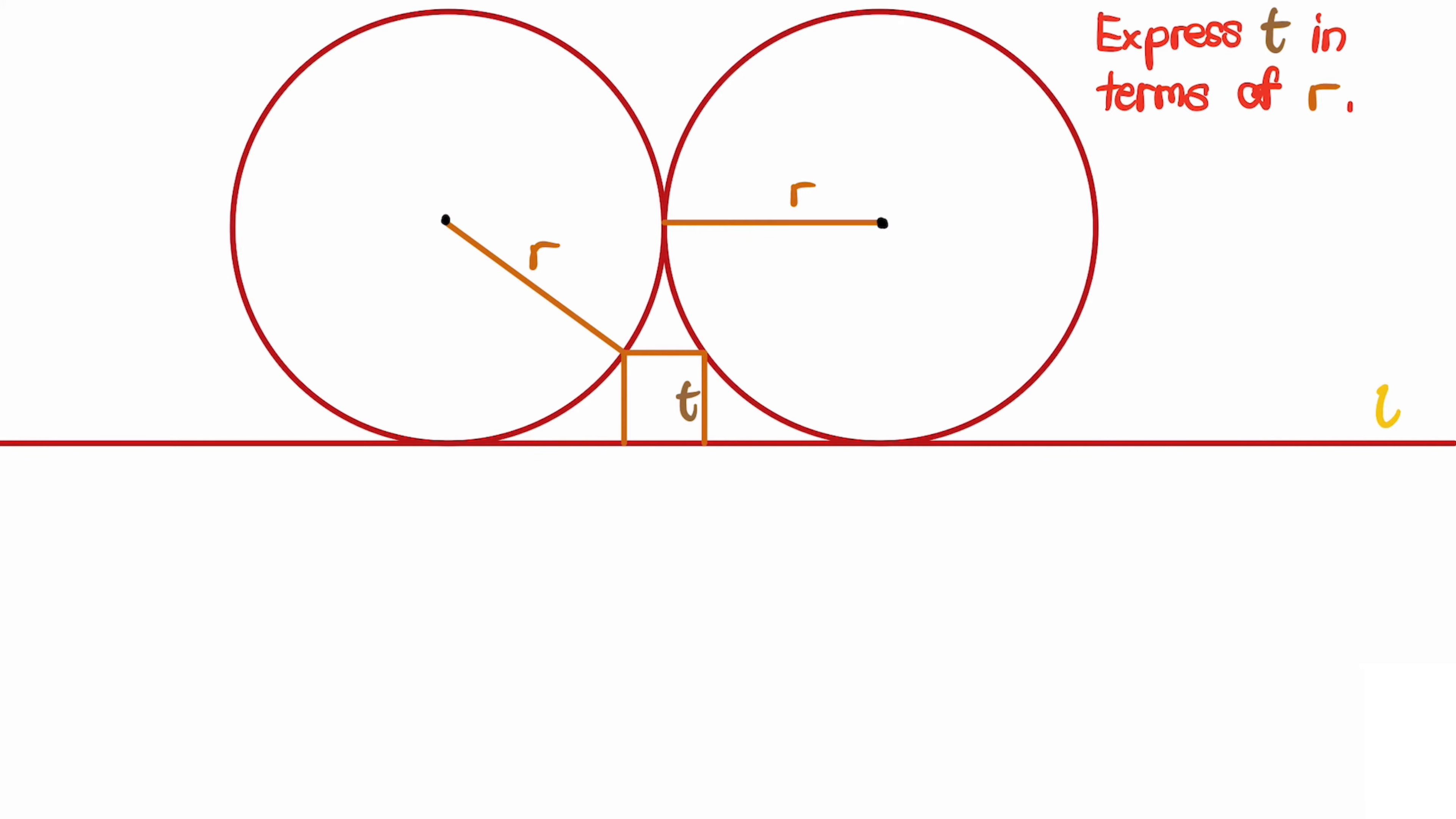Let's look at the solution. First, name the two centers of the circles as X and Y respectively. To solve this problem, we want to relate r and t. In general, when we solve these kinds of problems, we want to create a right triangle so we can apply the Pythagorean theorem.